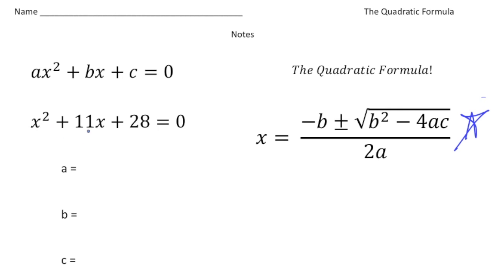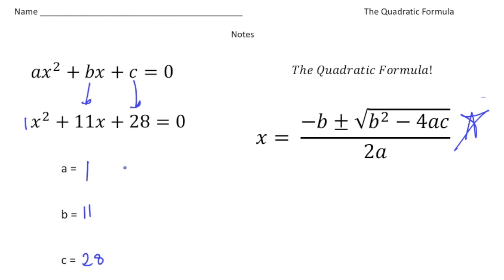We have x squared plus 11x plus 28 equals zero. The first thing you have to do is make sure the equation is written in standard form — and this one is. So we need to determine what the a, b, and c values are. We really have a 1 here, so our a value is going to be 1. Our b value is 11, and our c value is 28. Now that we have our a, b, and c values, it's just a matter of carefully plugging them into the formula.